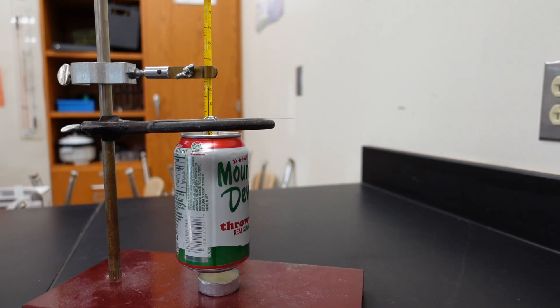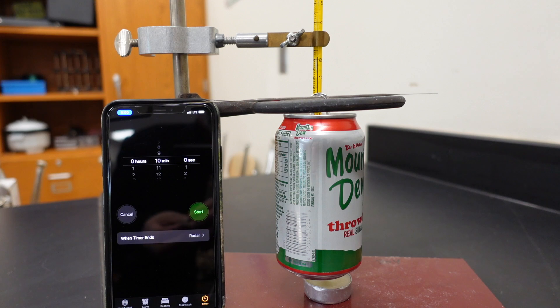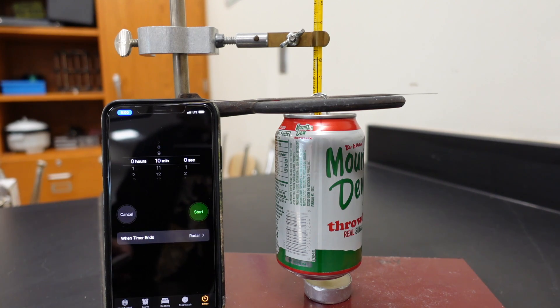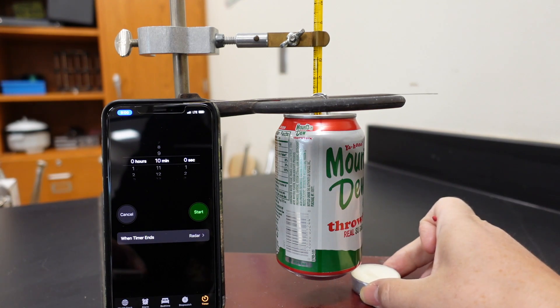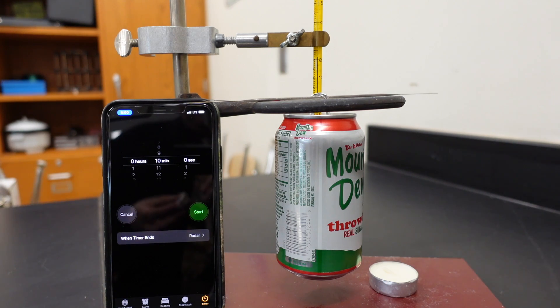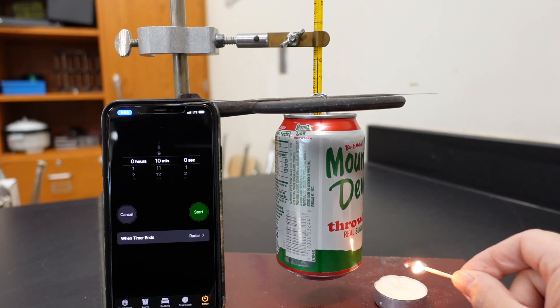Okay, now we are going to let this roll for 10 minutes, so I need to get a timer. Okay, so let's light the match, get the candle out from underneath, light the candle.